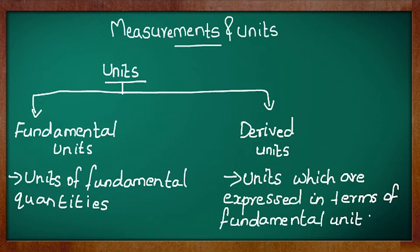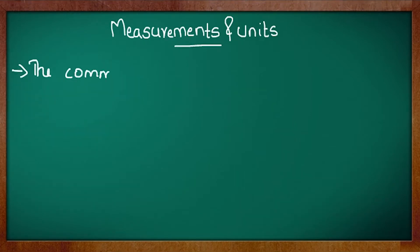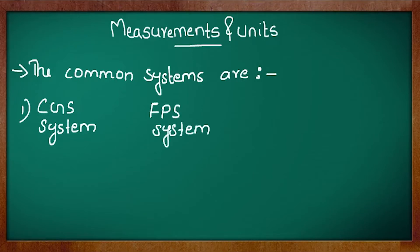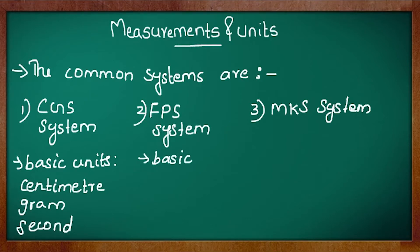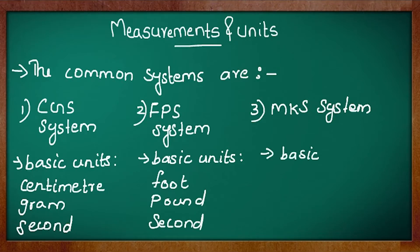Several system of units have been used for describing measurement and the common systems are CGS system, FPS system and MKS system. In CGS system basic units are centimeter, gram, second. In FPS system basic units are foot, pound, second, and in MKS system basic units are meter, kilogram, second.